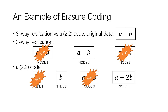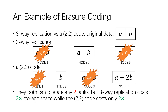When node 1 and node 3 fail, in three-way replication node 2 still keeps the original data. In the (2,2) code, we can still get B and A+2B from nodes 2 and 4, and then compute A and A+B, so data are still recoverable. They both can tolerate any two faults. Three-way replication costs three times the storage space, while the (2,2) code costs only two times.